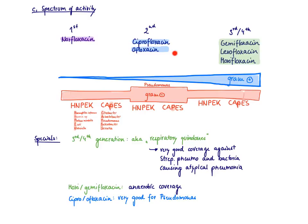However, the second generation, ciprofloxacin and ofloxacin, are very, very good in covering pseudomonas. In the second generation, the P becomes big. I've also marked here that the gram-negative coverage is extremely well.